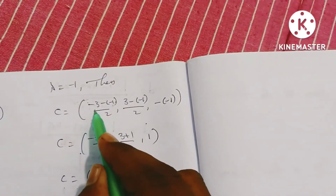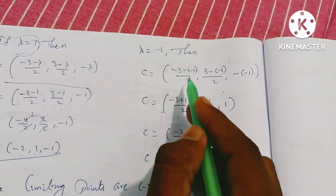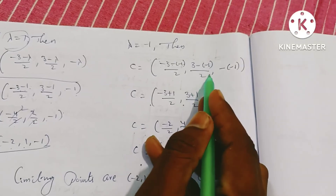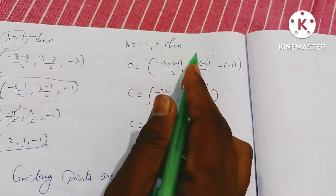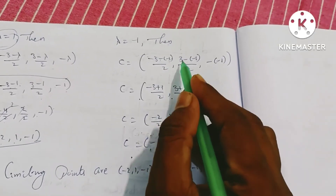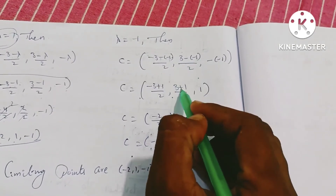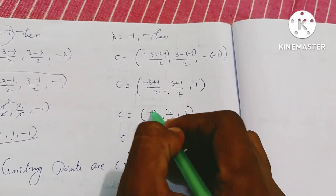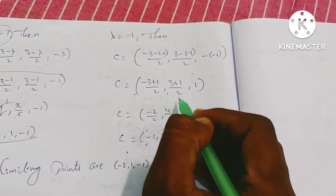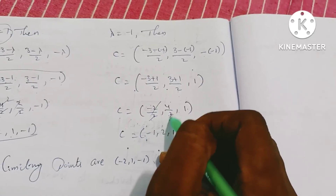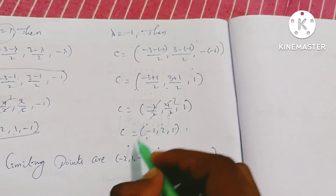When lambda equals minus 1, the center equals: minus (3 plus minus 1) by 2, comma (3 minus minus 1) by 2, comma minus (minus 1). That gives minus (3 minus 1) by 2, comma (3 plus 1) by 2, comma plus 1, which equals minus 2 by 2, comma 4 by 2, comma 1, giving minus 1, comma 2, comma 1.